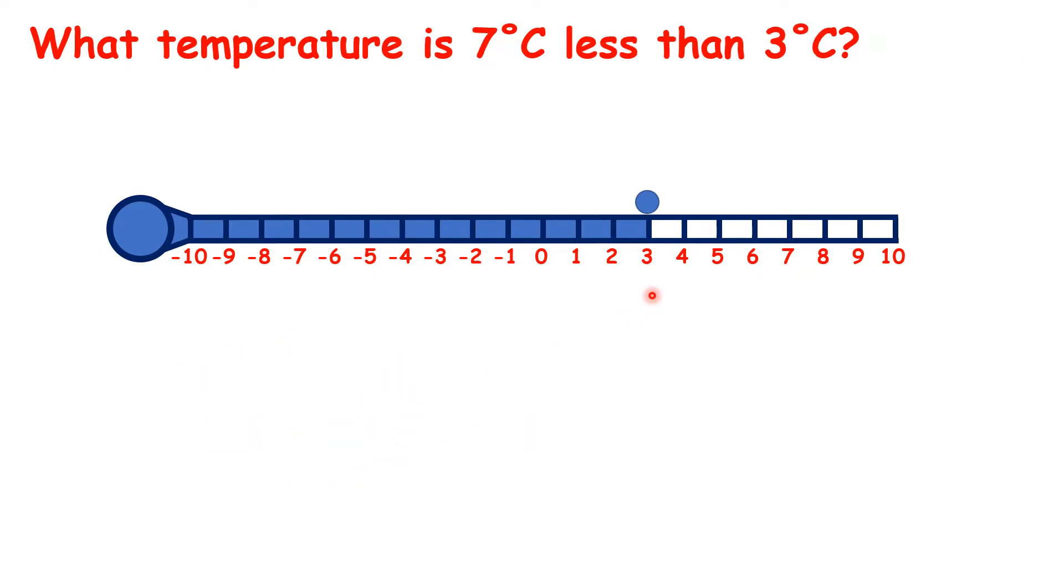Now, what temperature is 7 degrees less than 3 degrees? Well, we have our number line and when we count back, we get to minus 4.